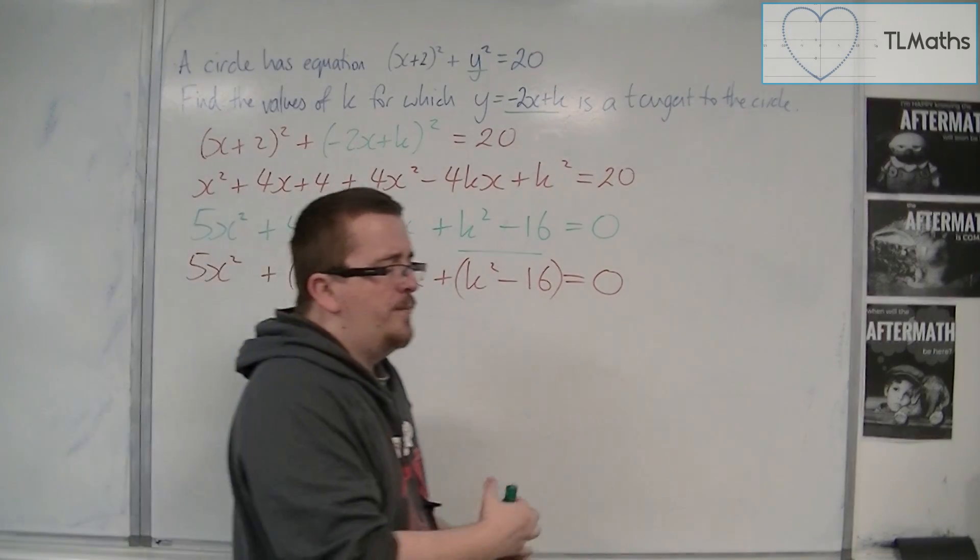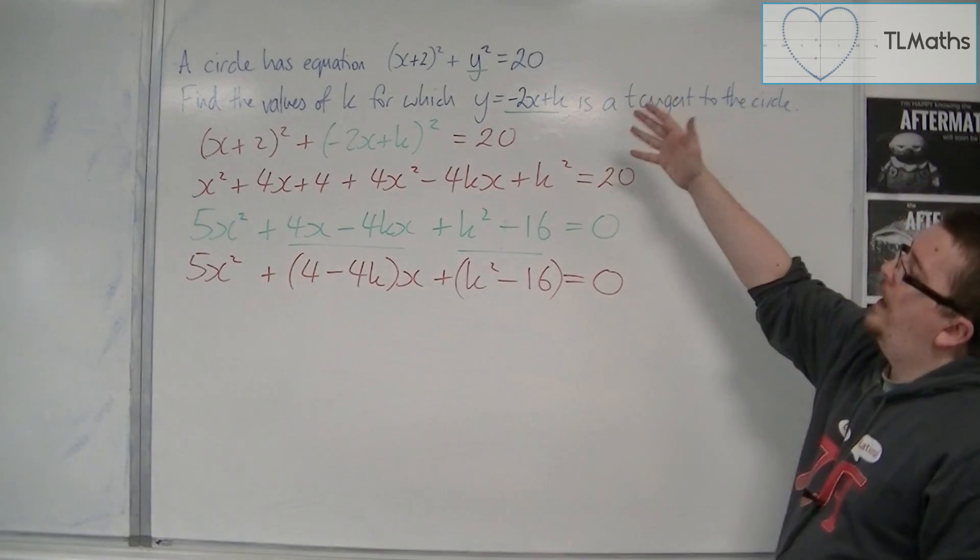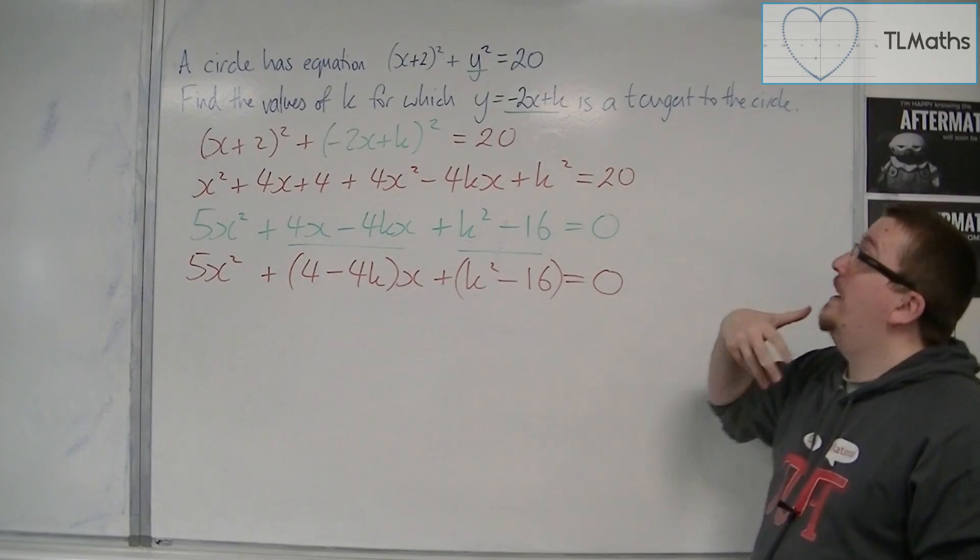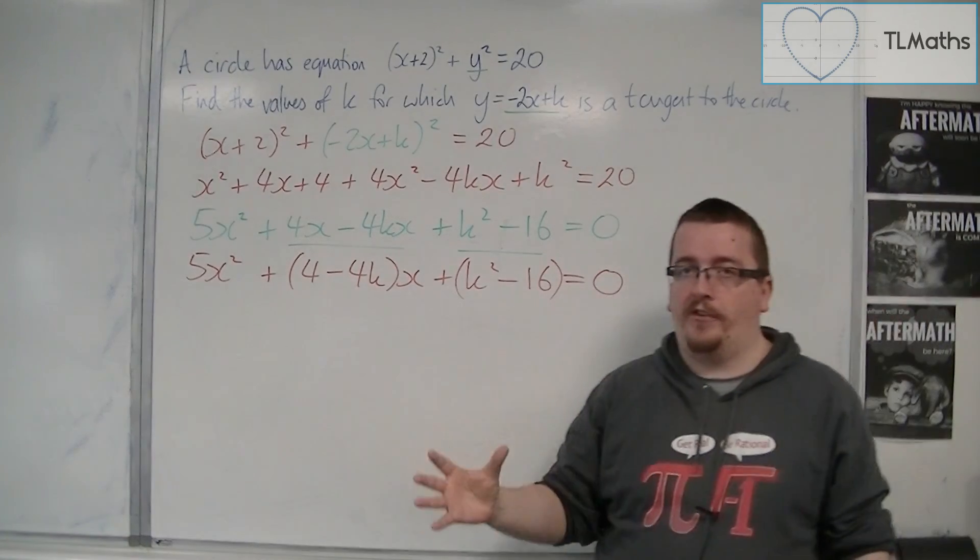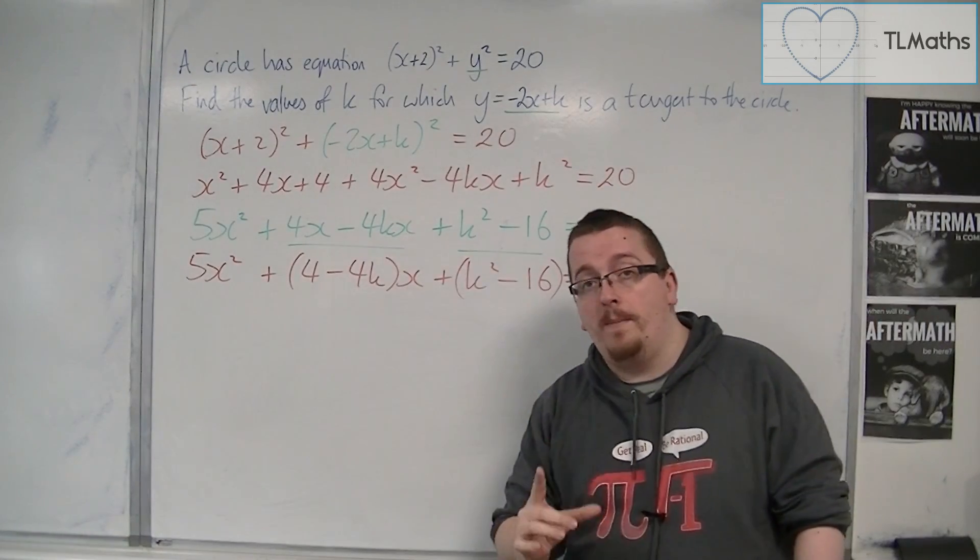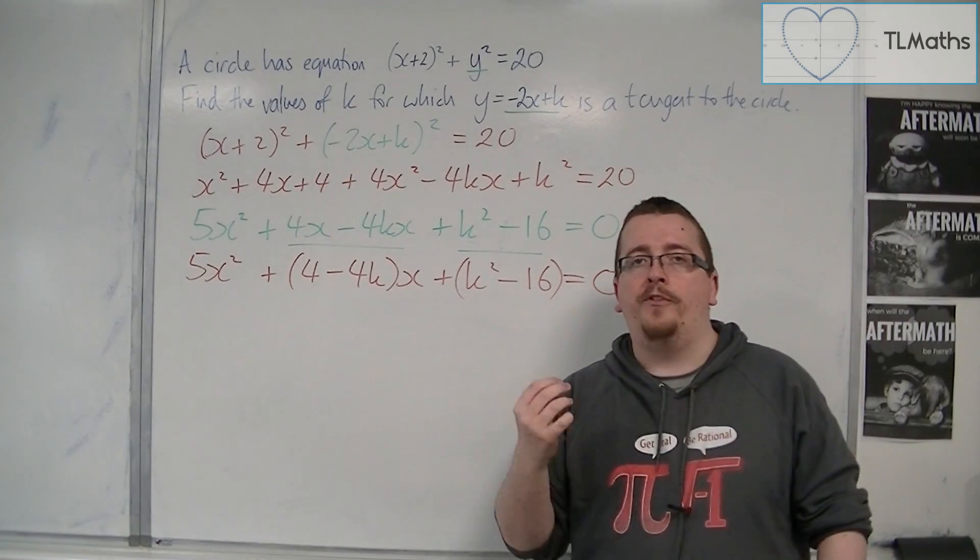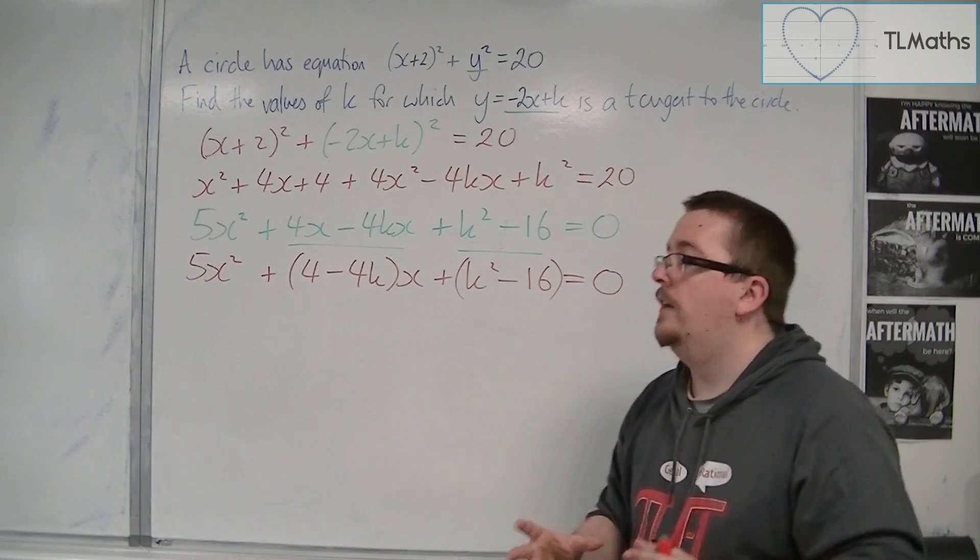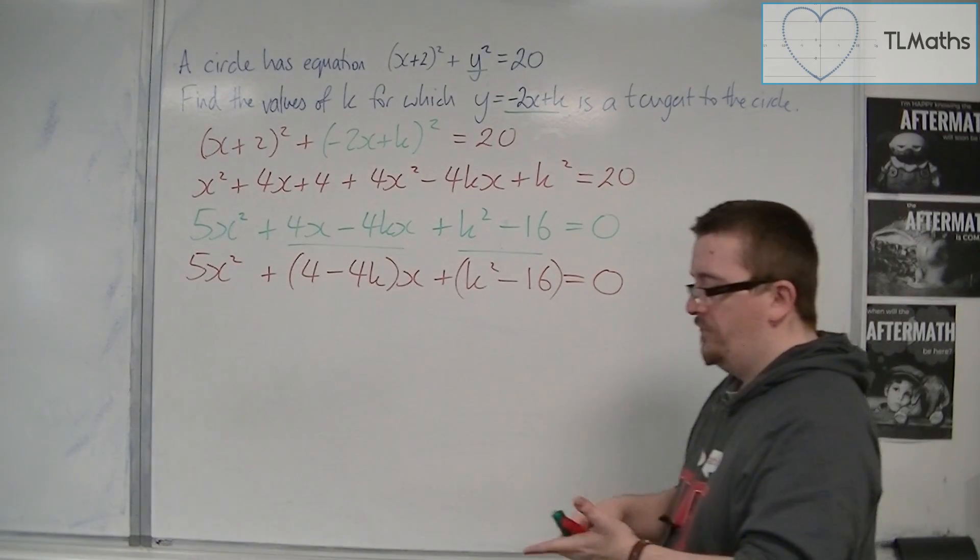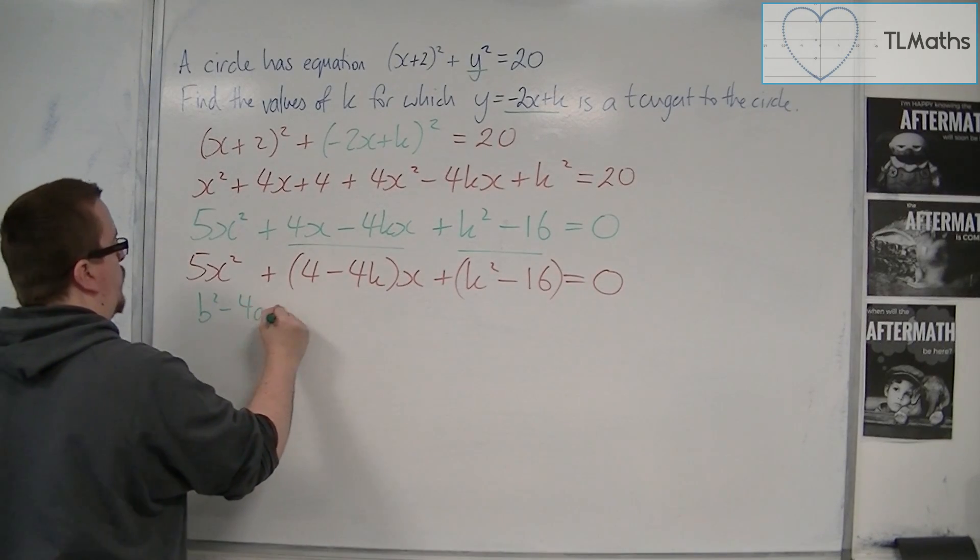Now, if the line y = -2x + k is a tangent to the circle, then the discriminant of this quadratic equation will be equal to 0. That is the step that we need to take here to find those values of k. So the discriminant is going to be equal to 0.